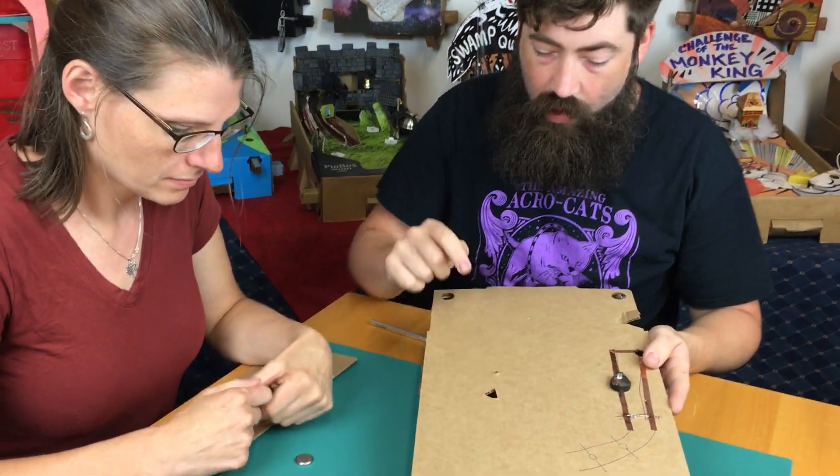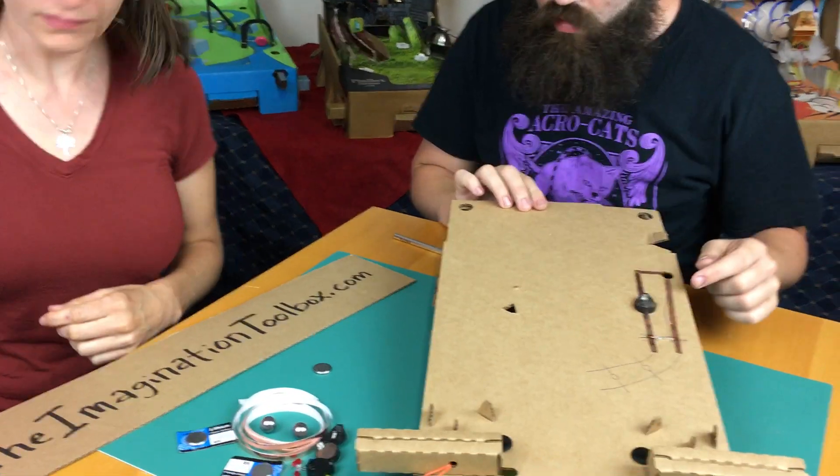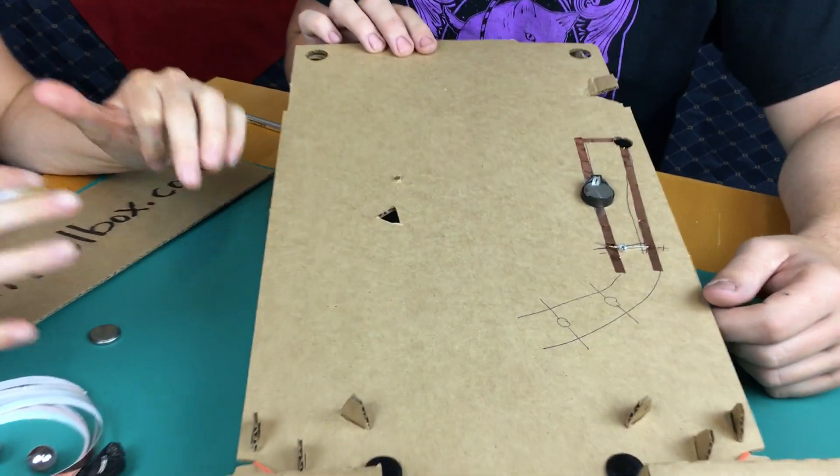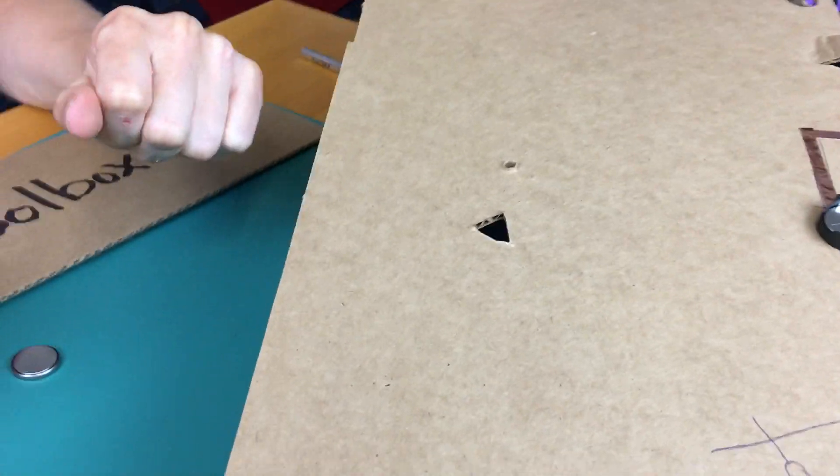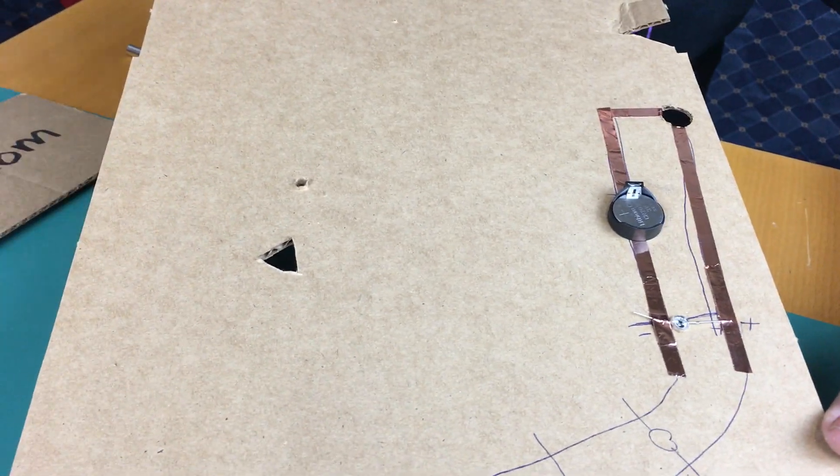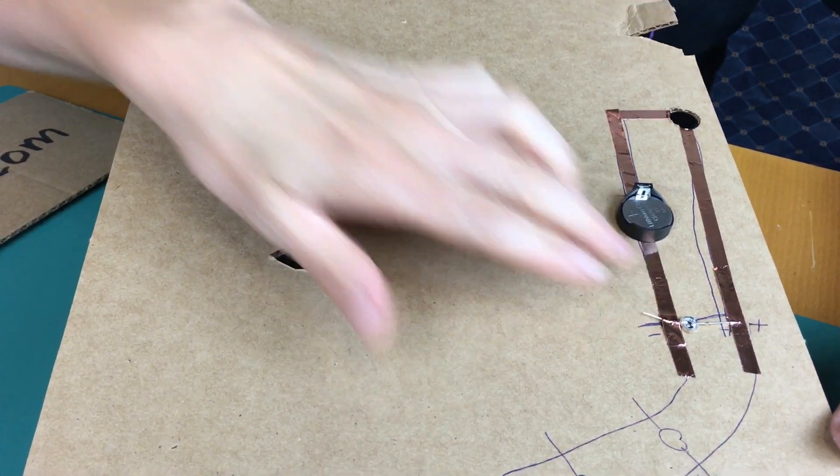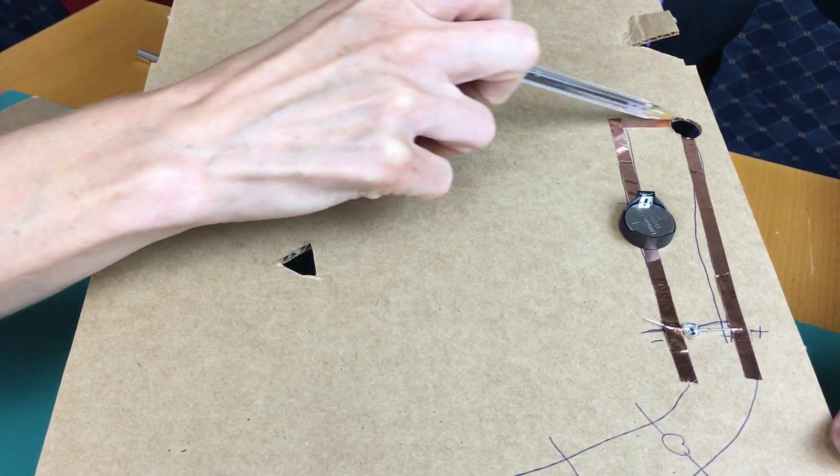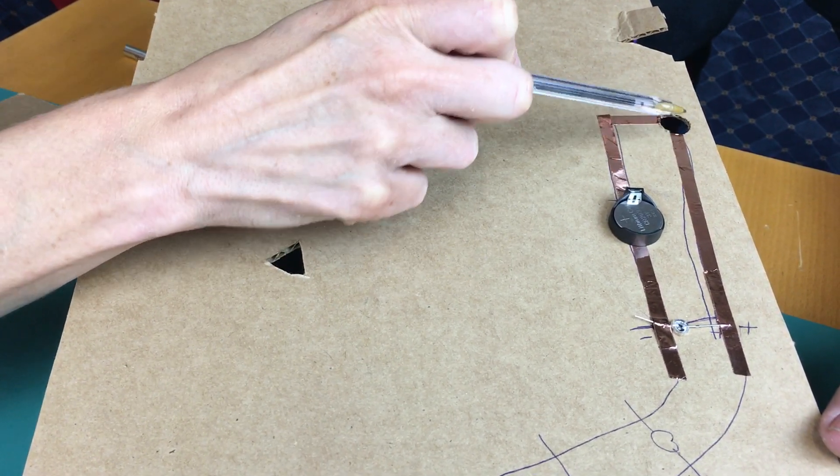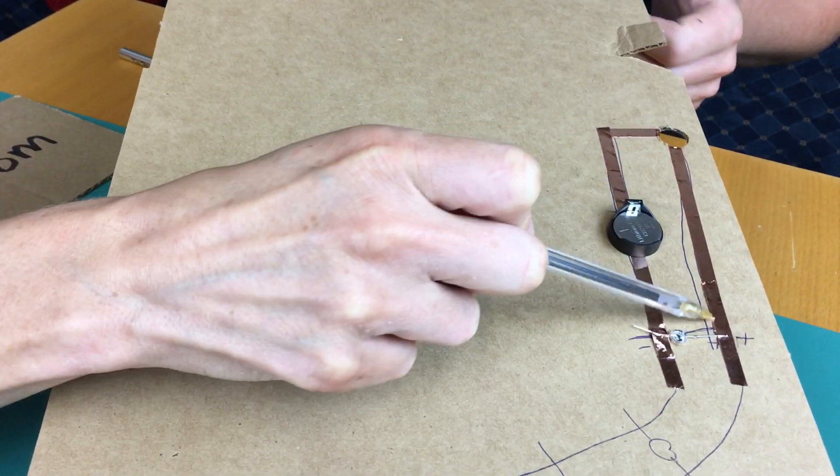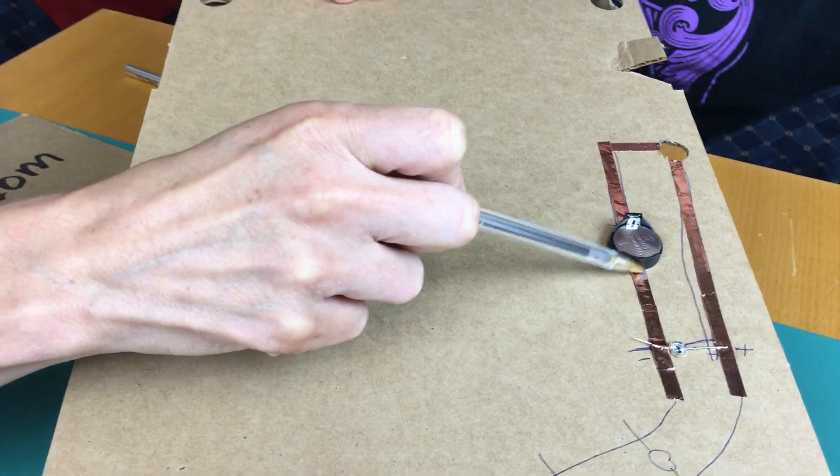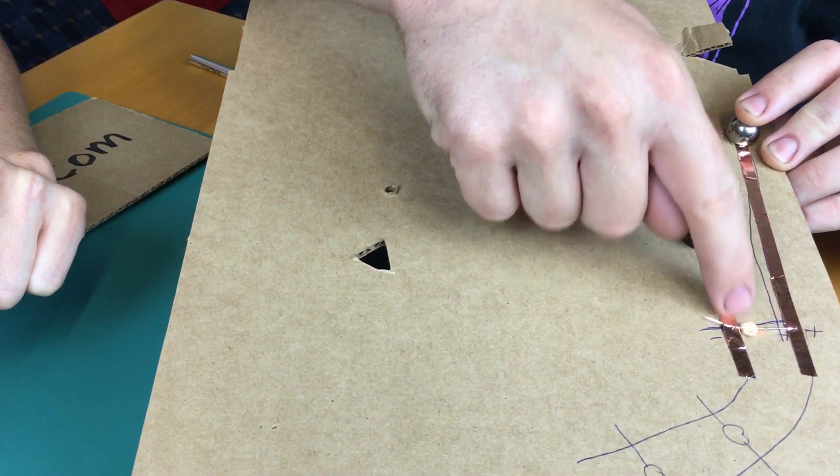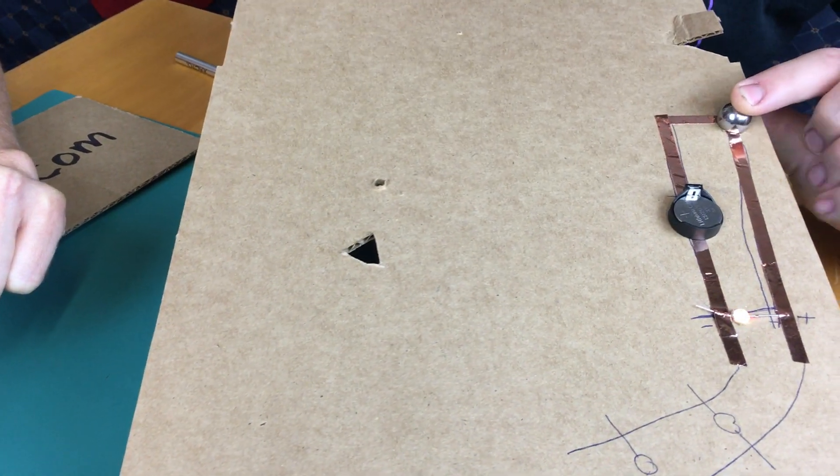What's important to do is plan our circuit out before we start putting things together. You can see over here we created a circuit earlier - a path for our electricity to follow. It comes up, and when the marble's in here, it jumps across the ball bearing and comes down the other side, goes through the LED and back to the battery. We need to do the same thing on this side. This isn't one continuous piece - there's a break where the battery pack sits.